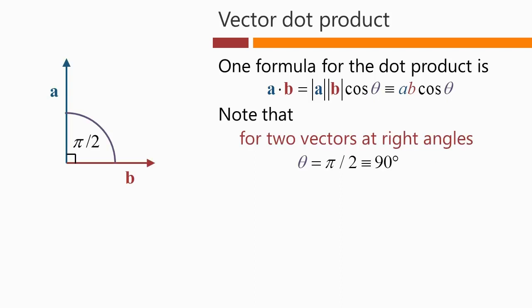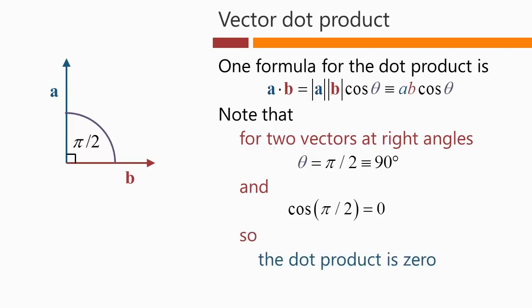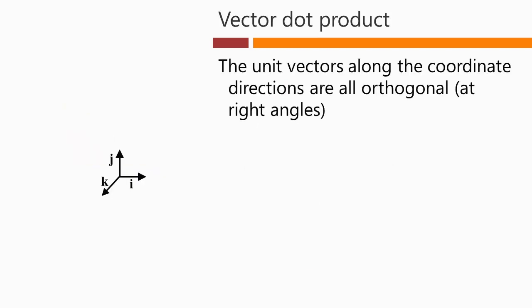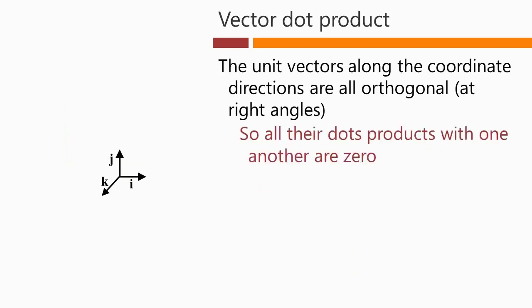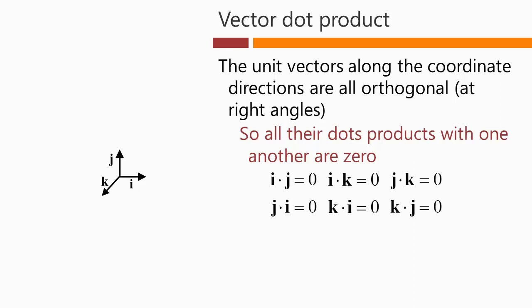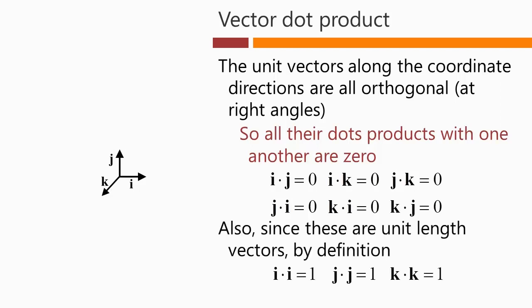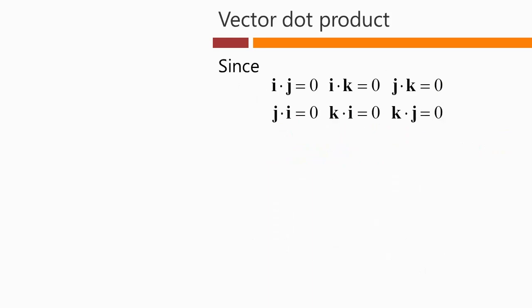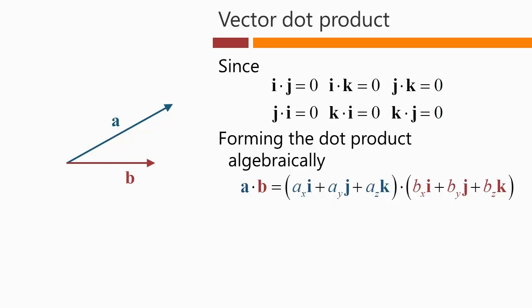For two vectors at right angles to one another — where the angle is pi over 2 — cos of pi over 2 equals 0, and so the dot product equals 0 as well. For all of these unit vectors, which are all orthogonal to one another, all their dot products with one another are 0. So i dot j equals 0 because i and j are orthogonal, and so on for all the other dot products of orthogonal unit vectors. Also, since these are unit vectors, the dot product of a unit vector with itself is just 1.